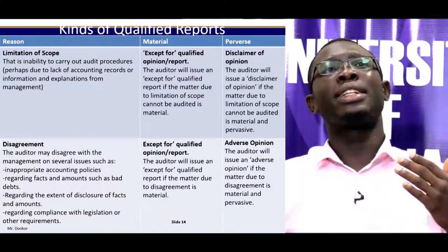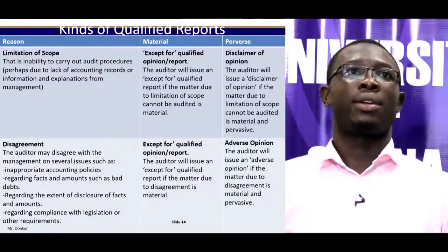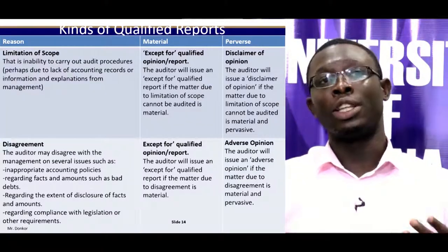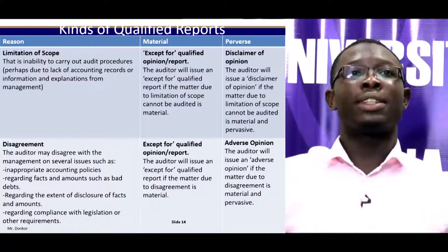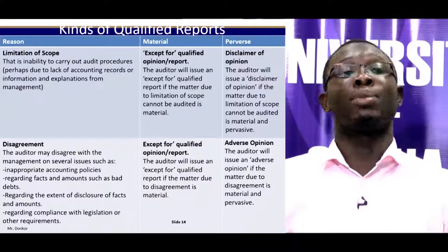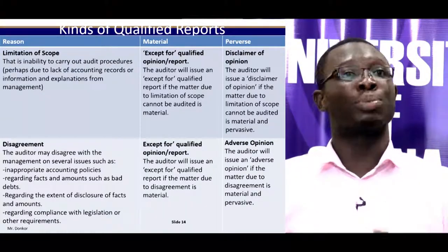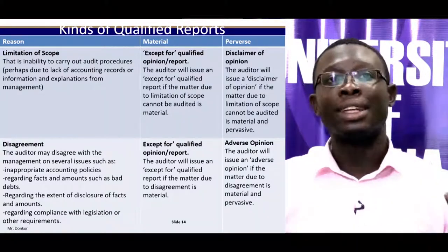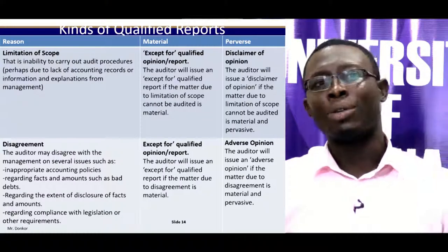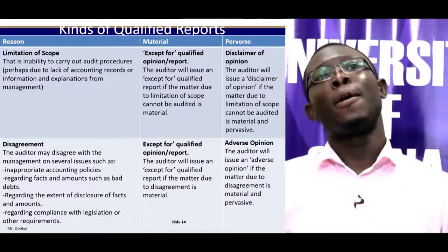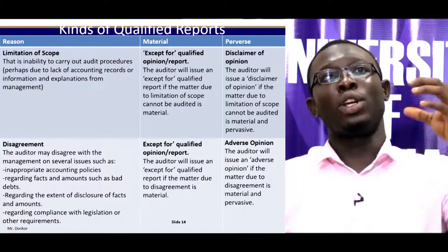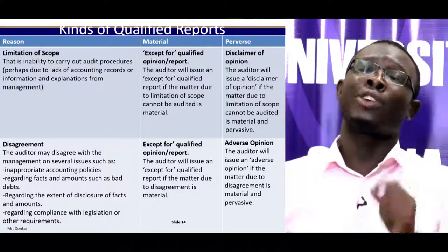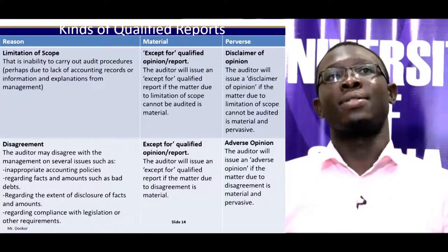Limitation of scope refers to the auditor's inability to carry out audit procedures, perhaps due to lack of accounting records or information and explanations from management. Disagreement is where auditors disagree with certain assertions, statements, or representations by management, which can relate to inappropriate accounting procedures or policies, facts and amounts such as bad debts, the extent of disclosure, or compliance with legislation or other requirements. These two key points — limitation of scope and disagreement — combined with material and pervasive, help determine the type of qualified report to issue.